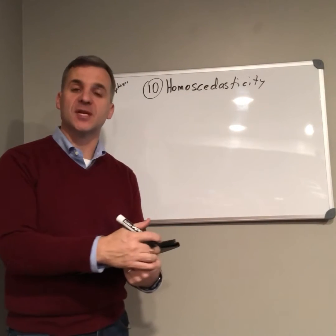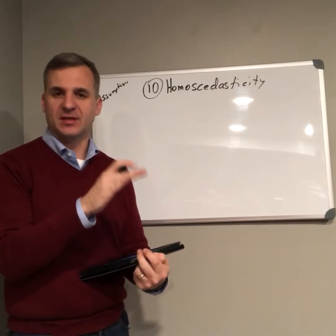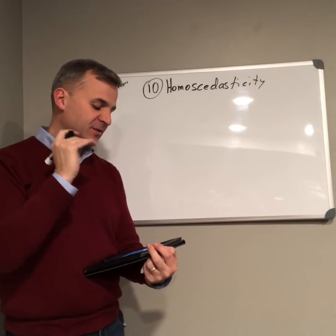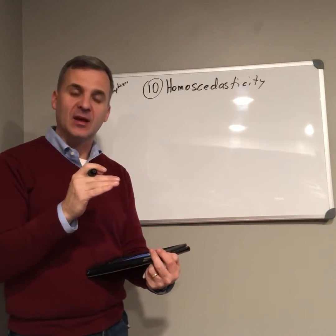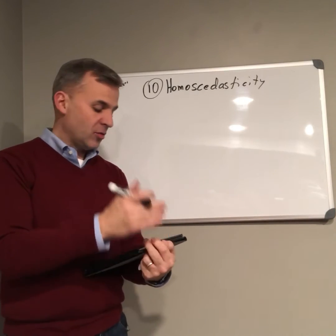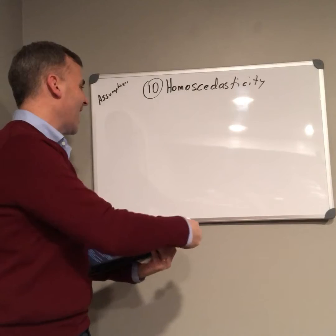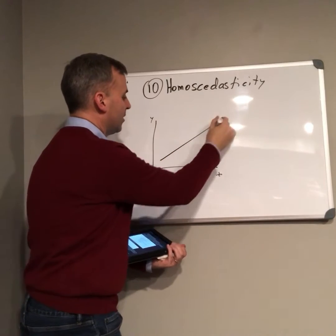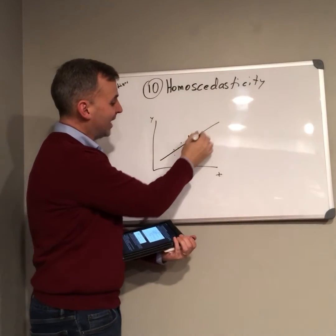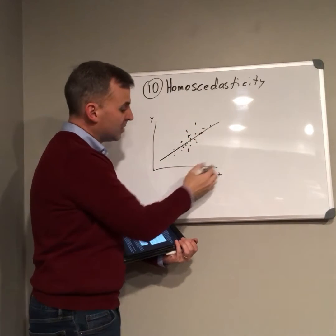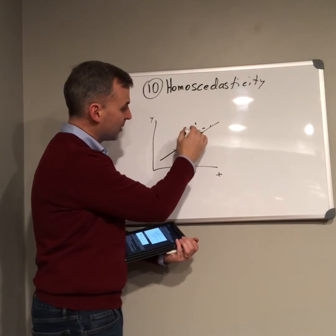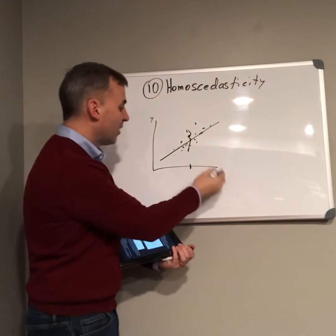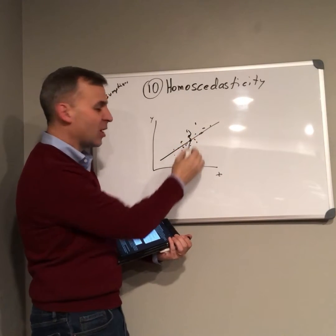Our next assumption is homoscedasticity — that's a fancy word that statisticians love to throw around. Here's what it means: for each set of values of the independent variable, the variance of errors is constant. So for any given value of X, there is only one expected value of Y.